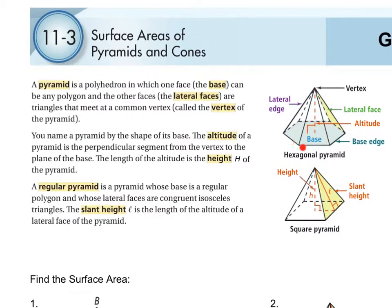The bottom polygon is the base, and the vertex is where all those faces meet. In naming a pyramid, it's just like naming a prism — it's named according to what shape the base is. In this case here, we have a hexagonal pyramid.